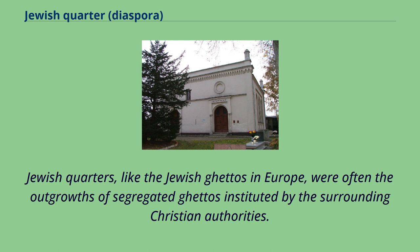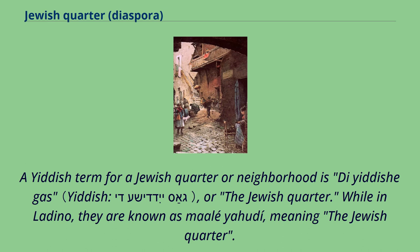Jewish quarters, like the Jewish ghettos in Europe, were often the outgrowths of segregated ghettos instituted by the surrounding Christian authorities. A Yiddish term for a Jewish quarter or neighborhood is the Yiddish quarter, or the Jewish quarter. While in Ladino, they are known as Mali Yehudi, meaning the Jewish quarter.